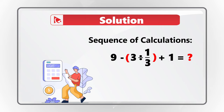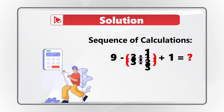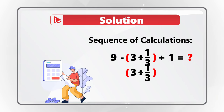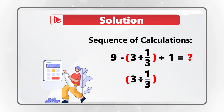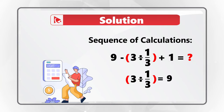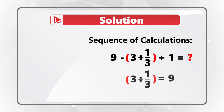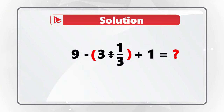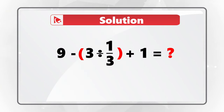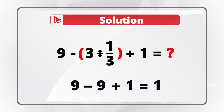Dividing 3 by 1 third — to emphasize this, I put this expression into red parentheses. When you calculate 3 divided by 1 third, you will get the result of 9. And then you need to do sequentially subtraction and then addition: 9 minus 9 equals 0, plus 1 equals 1. This is the reason the correct choice here is Choice A, 1.